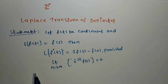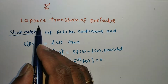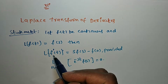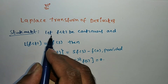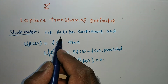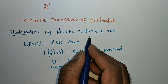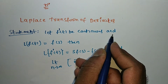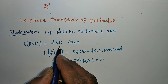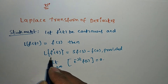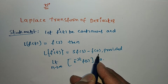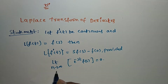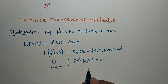In this video we are discussing Laplace transform of derivative. The statement is: let f'(t) be continuous and L{f(t)} = F(s). Then L{f'(t)} = s·F(s) - f(0), provided limit as n tends to infinity of e^(-st)·F(s) equals 0.